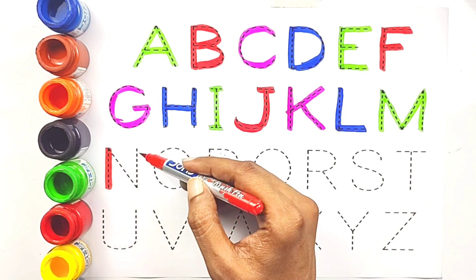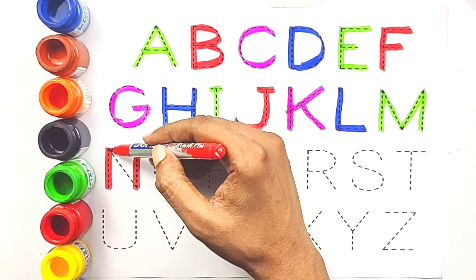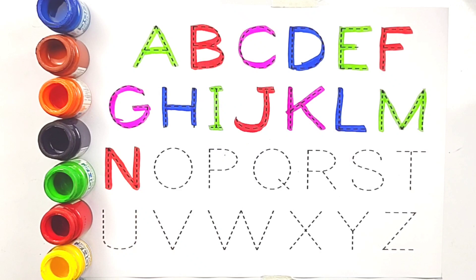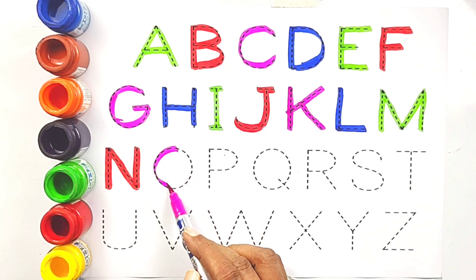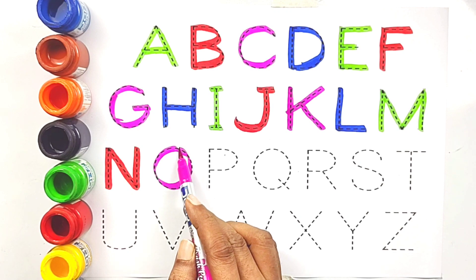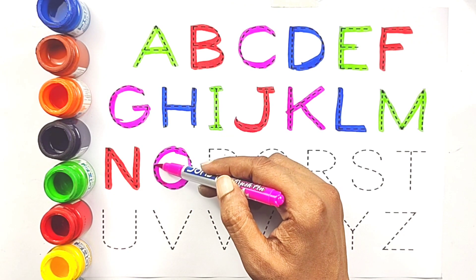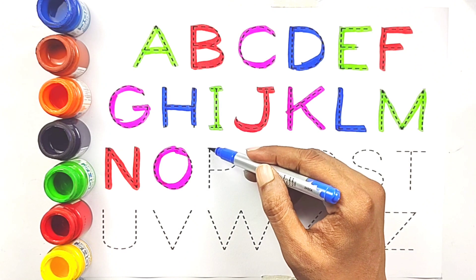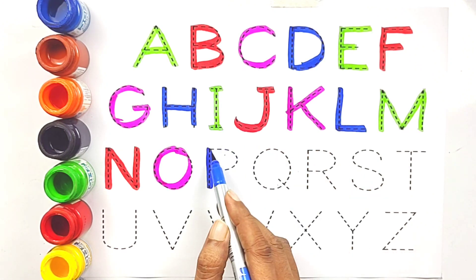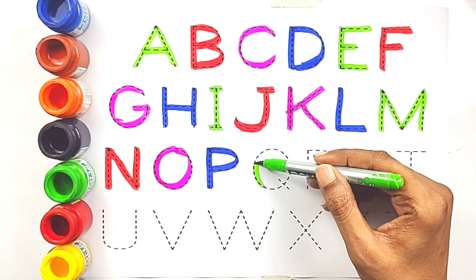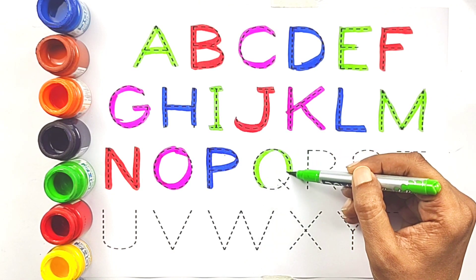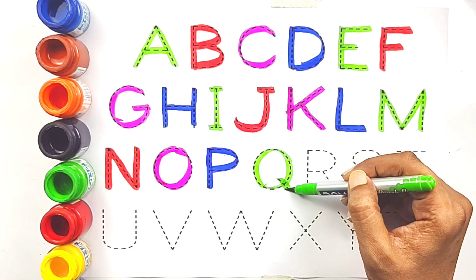Red color. N, N for nest, N for nest. Magenta color. O, O for owl, O for owl. Blue color. P, P for peacock, P for peacock. Green color. Q, Q for queen, Q for queen.